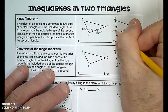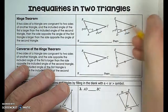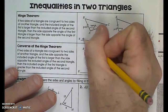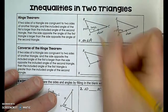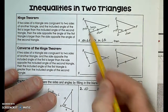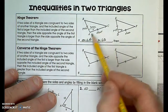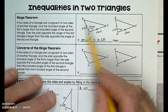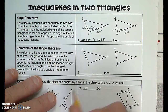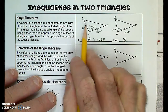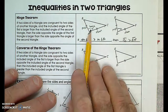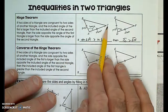This is the post, this is the door, and this is the hinge in between. The hinge theorem says: if the measure of angle A is greater than the measure of angle D, and the two sides surrounding each angle are congruent — this side congruent to that side, this side congruent to that side — then BC is going to be greater than EF. Opening the door wider means the opening is greater.